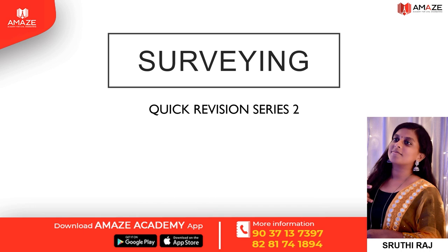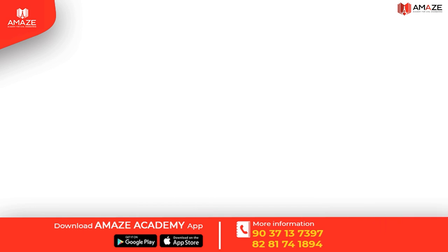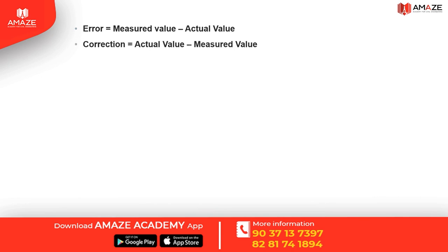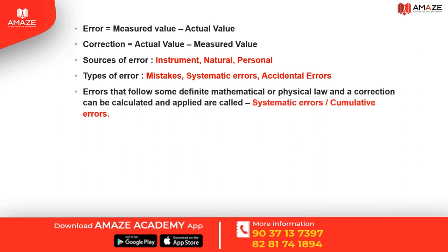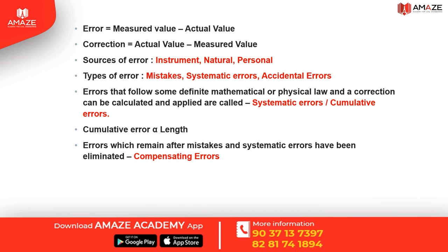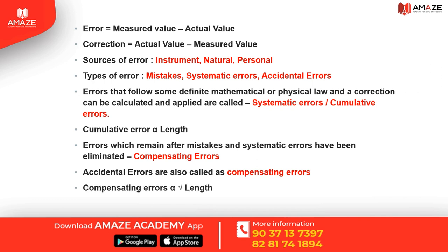We will consider the following chain corrections. Error is measured value minus actual value, and correction is actual value minus measured value. Sources of error are instrumental, natural, and personal. Types of error include mistakes, systematic errors, and accidental errors. Errors that follow some definite mathematical or physical law and for which a correction can be calculated are called systematic errors or cumulative errors, and cumulative error is proportional to the length. Errors which remain after mistakes and systematic errors have been eliminated are compensating errors. Accidental errors are also called compensating errors, and compensating error is proportional to the square root of length. Errors that follow a law of probability are called accidental errors. So systematic errors follow some definite mathematical law, and accidental errors follow a law of probability.